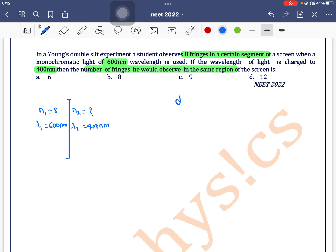We can write distance d1 is equal to d2. This region is same. So, n1 into beta 1 is equal to n2 into beta 2.